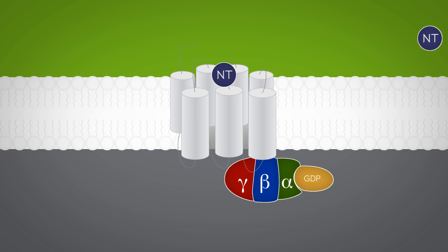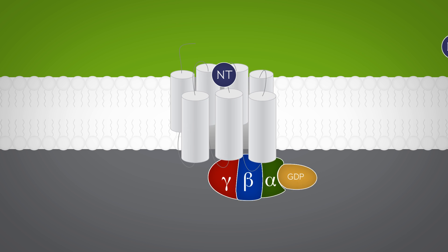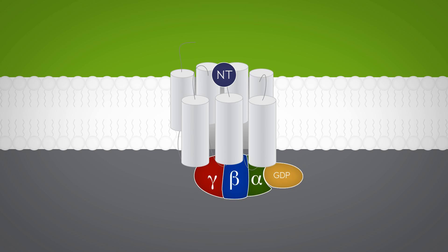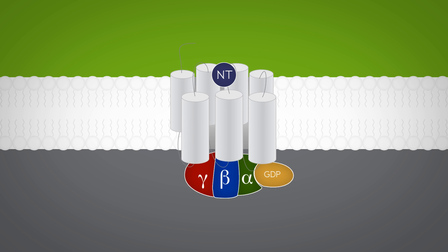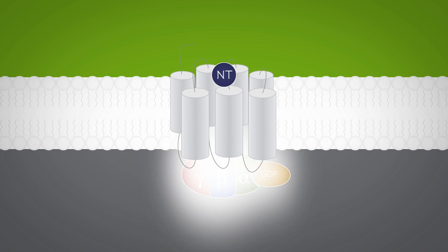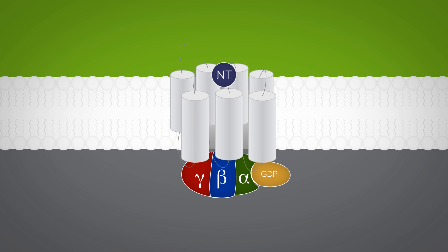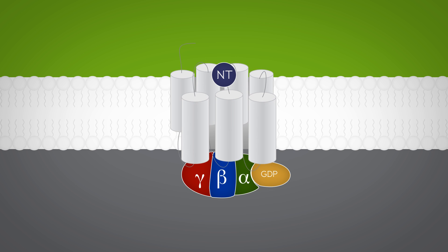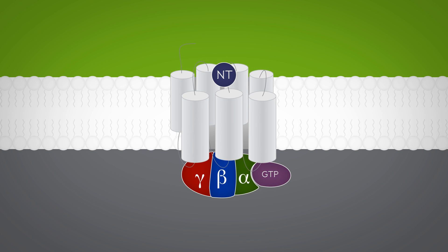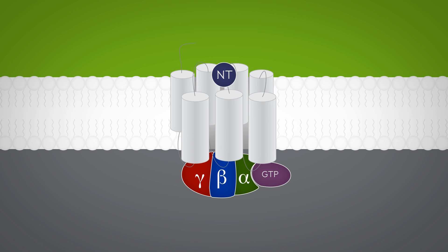allowing the G-protein to bind to its intracellular domain. The alpha subunit then exchanges its GDP for a guanosine triphosphate, GTP, creating an active state.